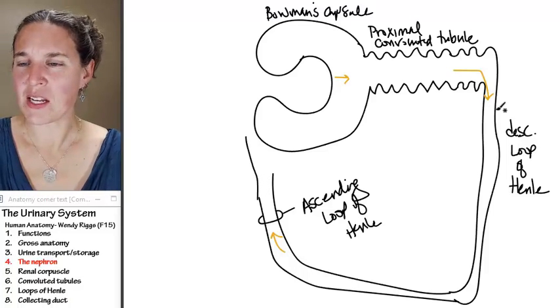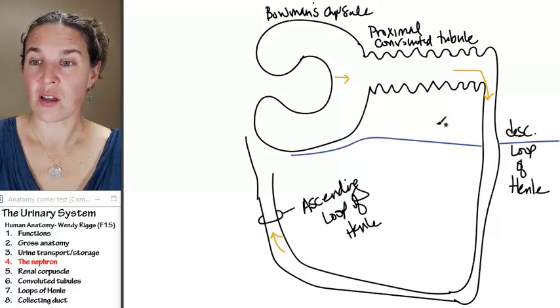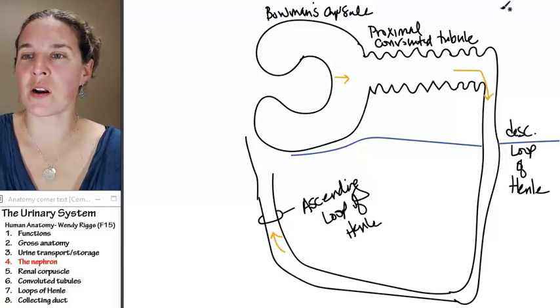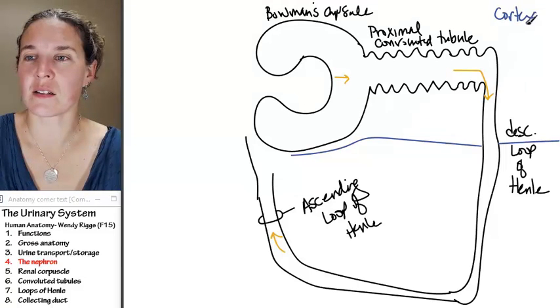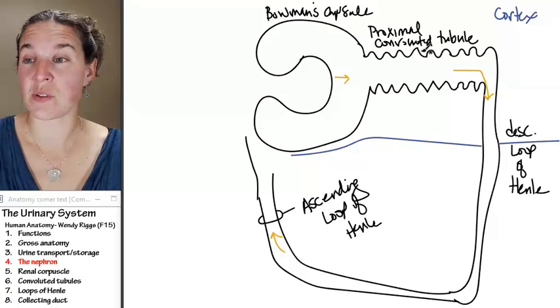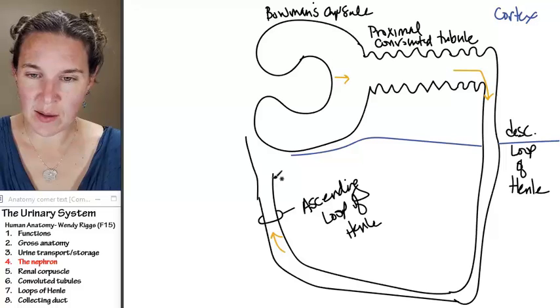We have to make note that these structures, Bowman's capsule, proximal convoluted tubule are in the cortex of the kidney. The loops of Henle dip down into the kidney. Once we get out of the cortex, I mean out of the medulla.